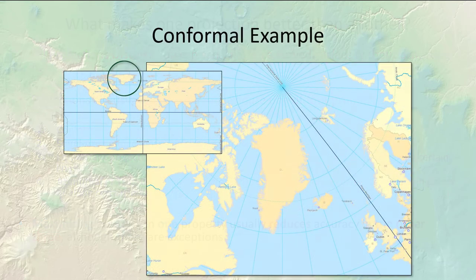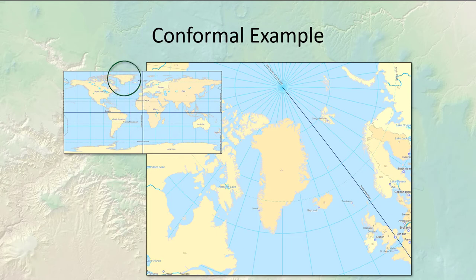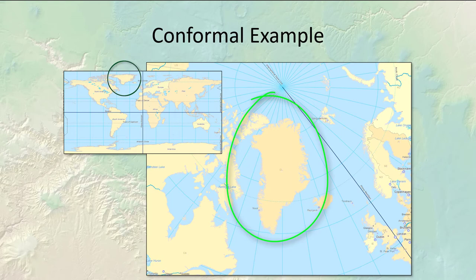For mapping, you usually want a conformal projection; for analysis, you typically want equal area, equidistant, or azimuthal projections. Conformal projections make the landscape look correct. Take Greenland as an example — Greenland is famous for being way oversized in a geographic coordinate system. But if we use a conformal projection, the shape of Greenland looks correct and makes a much more aesthetically interesting and defensible map.